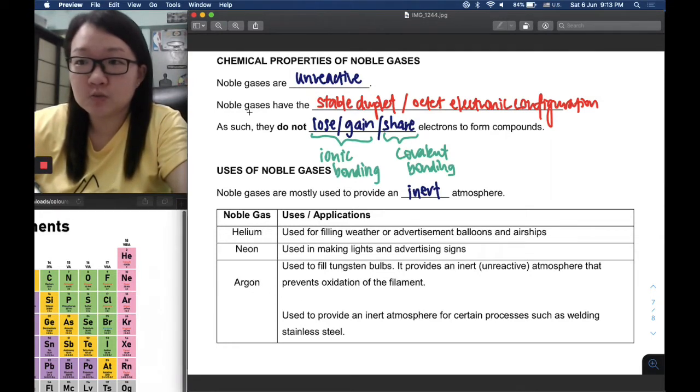Noble gases have a stable duplet or octet electronic configuration, as we've mentioned during chemical bonding. Duplet is applicable for helium only because helium has an electronic configuration of two, whereas the other elements from neon onwards all have octet, meaning they have eight valence electrons.